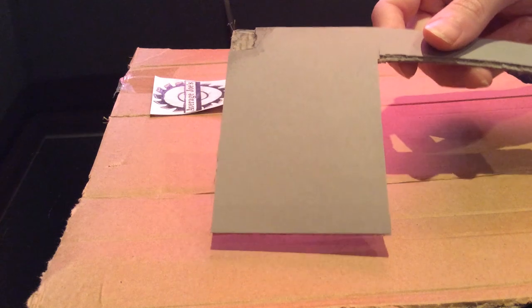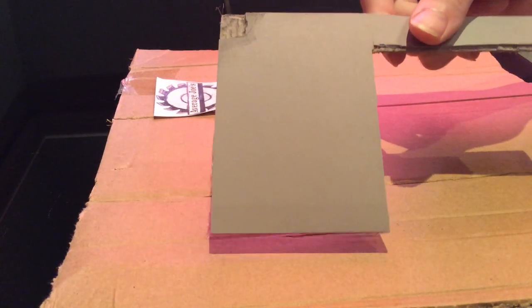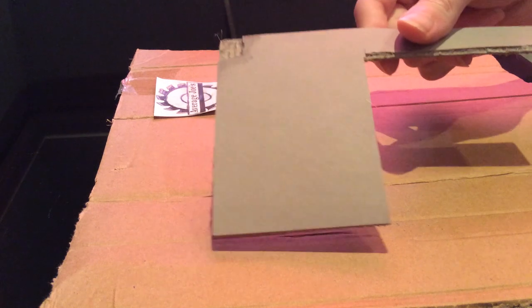This is what I'm going to use to make the actual stamp itself, it's called a lino block. I bought this myself off Ebay, it cost about £2 so it's not that expensive.